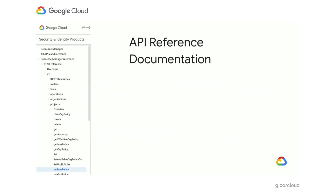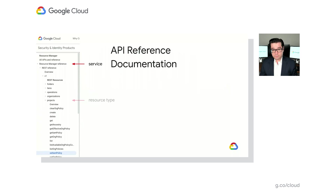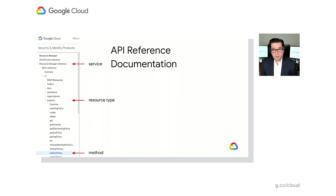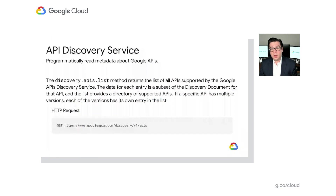But how can you find which resource types support IAM policy attachment and which APIs to call for each? One good place to start is the API reference documentation. Start by looking up the reference for the service related to where you want to set a policy. Next, find the resource type upon which you wish to set that policy. And lastly, look for the set IAM policy method. Note too that where this exists, there will also be a get IAM policy method, which is what you can use to retrieve any existing policy attached to that resource. All of this documentation is available on cloud.google.com/docs.